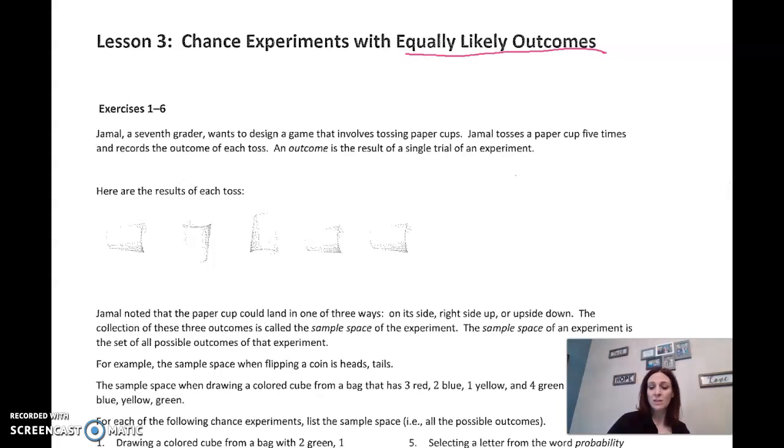Jamal, a seventh grader, wants to design a game that involves tossing paper cups. He tosses a paper cup five times and records the outcome of each. An outcome is the result of a single trial of an experiment. I know this isn't scanned real well, but you can see the paper cup here on its side, here standing straight up, here upside down showing the bottom, on its side here, and on its side here.